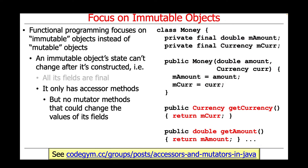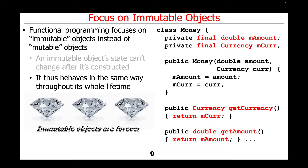The Money class also only has accessor methods — methods that return the values of its fields — such as getCurrency and getAmount, returning mCurr and mAmount respectively. However, there are no mutator methods that could change the values of its fields, which can't be changed anyway because they're defined as final. Instances of Money will behave in precisely the same way throughout their whole lifetime. Therefore, immutable objects are forever, just like diamonds.